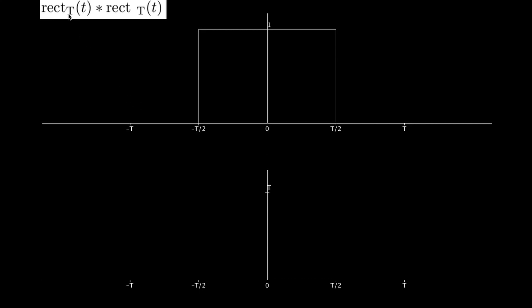How to find the convolution of two identical rect functions that have a width of t, and we're going to look at the graphical method. You can use the equation with integrals if you want, but the graphical method gives a slightly more intuitive way to think about it. So let's look at the setup first and then we'll go through the process.